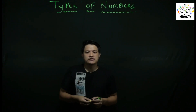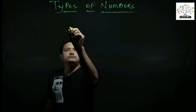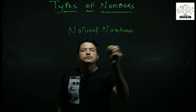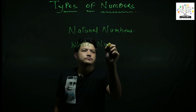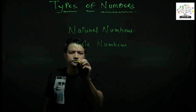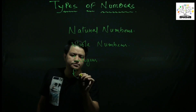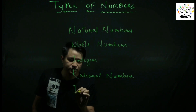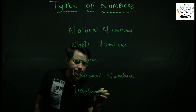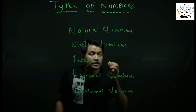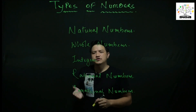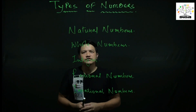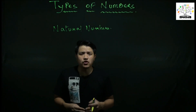Types of Numbers. The main types include Natural Numbers, Whole Numbers, Integers, Rational Numbers, and Irrational Numbers. We will look at these in two parts: Part 1 covers Natural Numbers, Whole Numbers, and Integers; Part 2 covers Rational and Irrational Numbers.